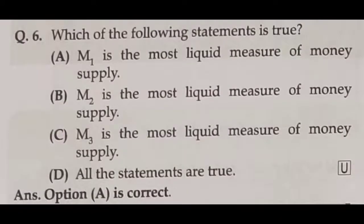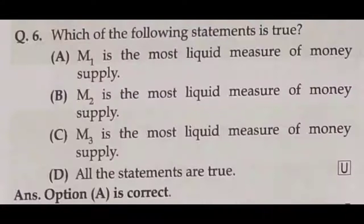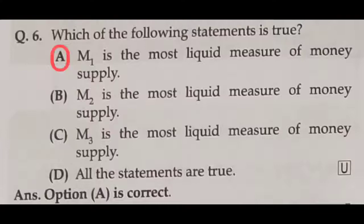Question number six: which of the following statements is true? M1 is the most liquid measure of money supply — that is true, because it consists of coins and currency in circulation and demand deposits as payment for goods and services. So M1 is the correct answer. Option A is correct.